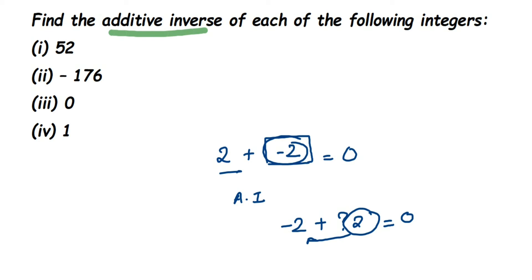So additive inverse of two was minus two, for minus two it was two. So same number but opposite sign. So if it is plus you will write the same number with minus sign and vice versa. So let's find out the additive inverse for the first question.